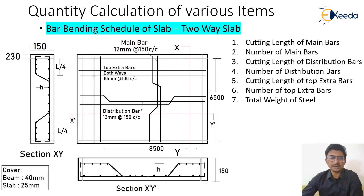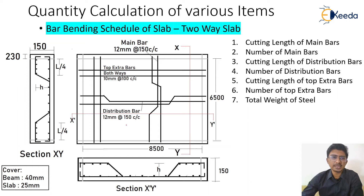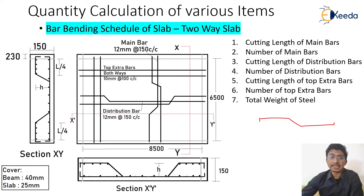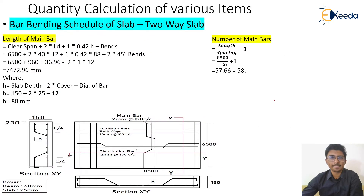Now let us understand the drawing. In the case of a one-way slab, the slab was supported on two beams on the longer side only. Here, we have four beams on all sides. The top extra bars are provided at L/4 distances on both sides. Main bars are 12 mm at 150 mm center to center and distribution bars are also 12 mm center to center. What we need to calculate is: the number and cutting length of main bars, cutting length and number of distribution bars, and cutting length and number of top extra bars — ultimately arriving at the total weight of steel.